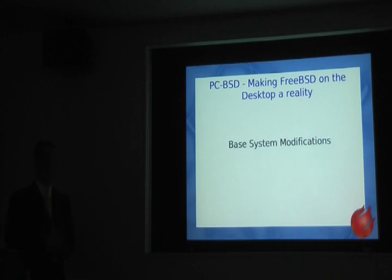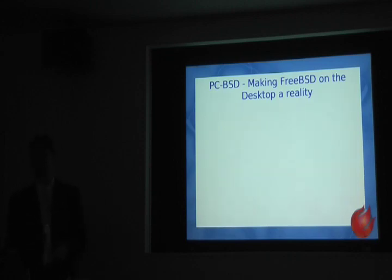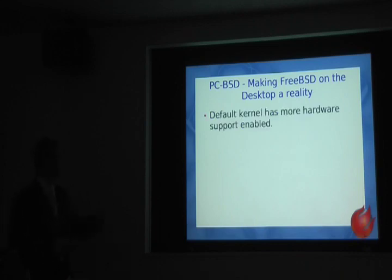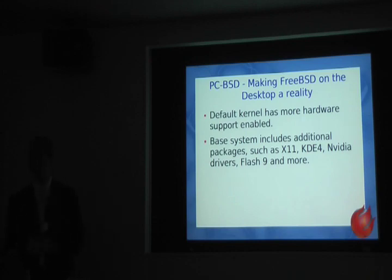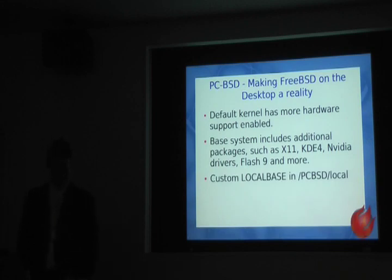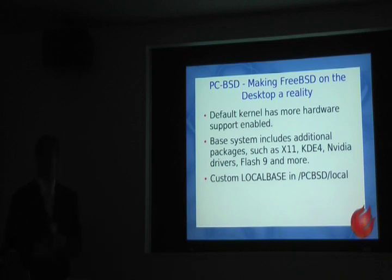Now we're going to look at the system modifications we're making to FreeBSD itself to make it a desktop. We're not a fork — we're not changing a whole lot. We use a slightly larger kernel configuration than generic, just to include some extra drivers out of box — some Wi-Fi cards and firmware — so it works without a kernel recompile. We also include a lot of packages in the base system: X11, KDE4, NVIDIA drivers, Flash 9 right out of the box. We also use a custom local base starting in the new version of PCBSD, which I'll touch on in a bit.